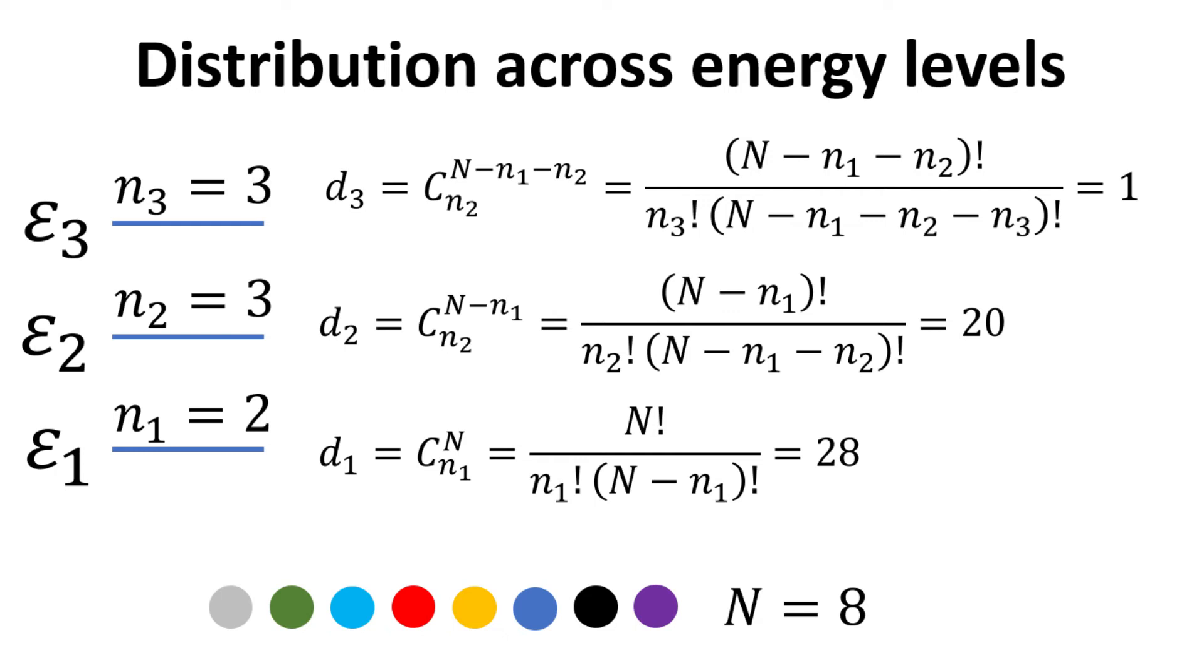For the second energy level, we have n2 equals to 3 particles. However, now the number of particles left to choose from is n minus n1.